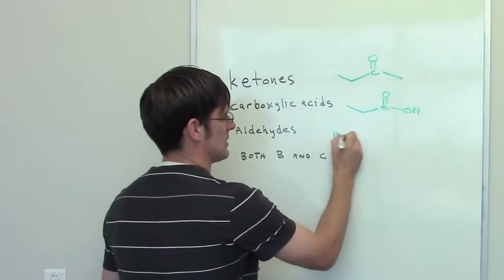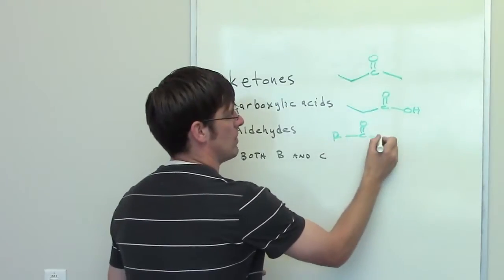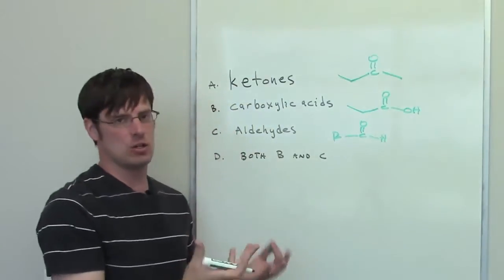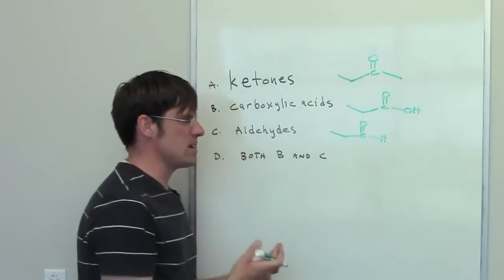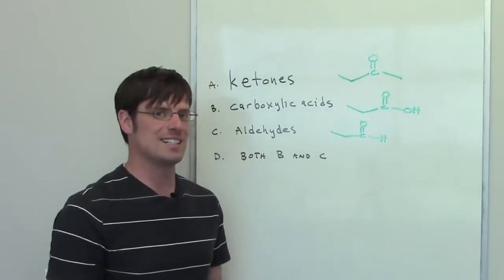Aldehydes look like this, where R represents, once again, any hydrocarbon chain. We can replace that with a specific example. The example shown here, which is a 3-carbon aldehyde called propanal.